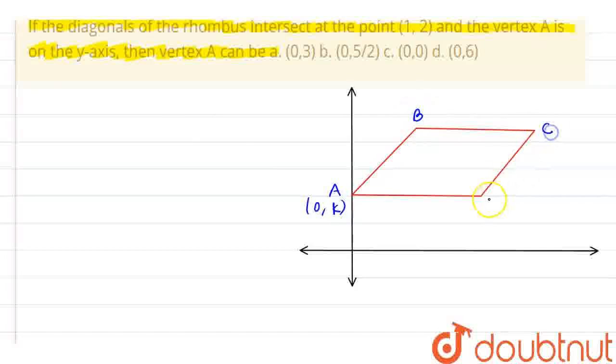This is B, this is C, this is D. Now, its diagonals meet at point E. So let this be my diagonal 1 and this is my diagonal 2. This is E point and this point is (1, 2).